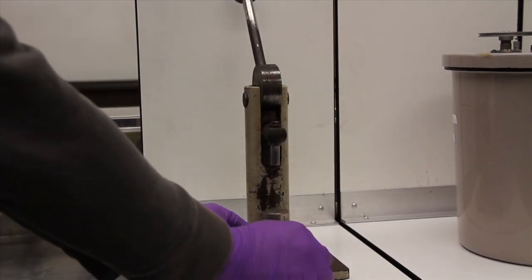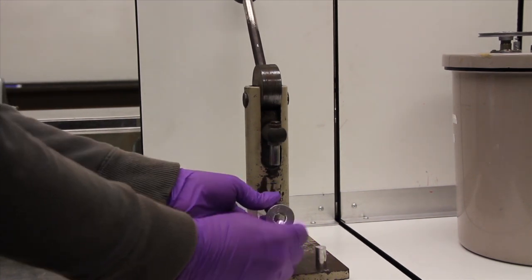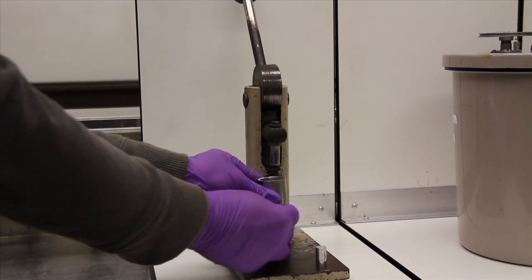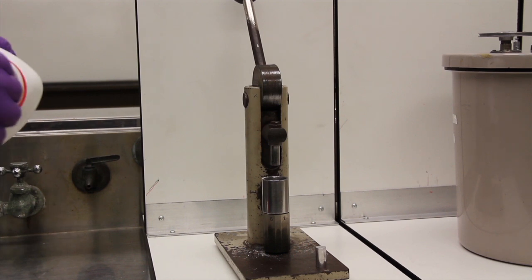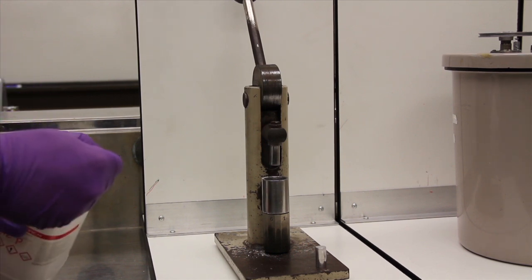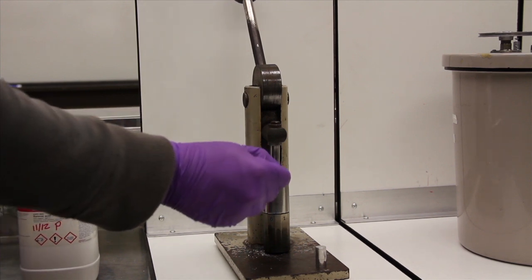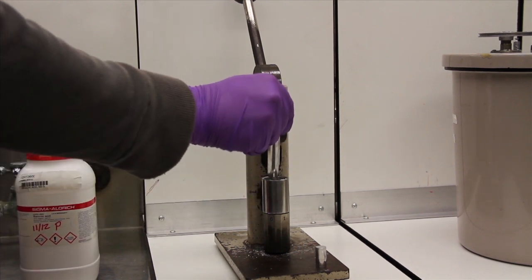In preparing a sample for analysis via bomb calorimetry, a press is used to generate a solid pellet from a powder. Prepare the pellet press by placing the solid end of one cylinder face up in the bottom of the press. Then load approximately one gram of the sample into the press.